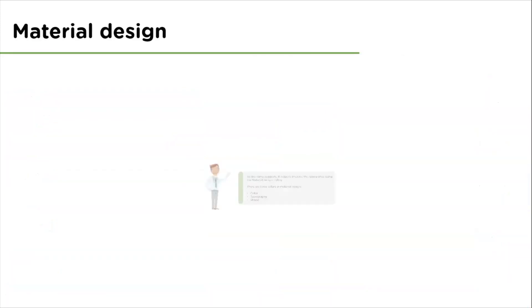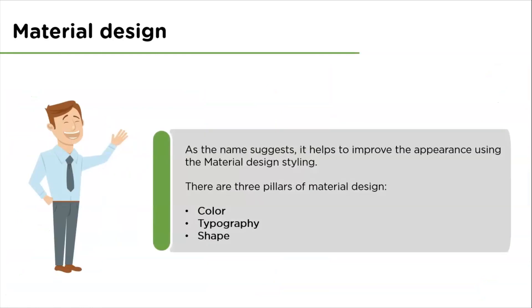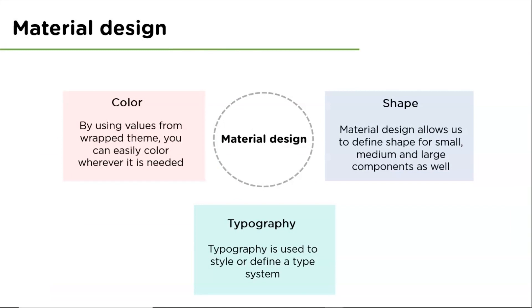Coming to Material Design. As the name suggests, it helps to improve the appearance using material design styling. There are three pillars of material design which are color, typography, and shape. For color, by using values from a wrapped theme, you can easily color wherever it is needed. Inside the Compose graphics package, there is a color class used by Jetpack Compose. To define material design, colorSystemColorClass is used. There are 13 attributes: primary, primaryVariant, secondary, secondaryVariant, backgroundSurface, error, onPrimary, onSecondary, onBackground, onSurface, onError, and isLight, each used to color wherever needed.